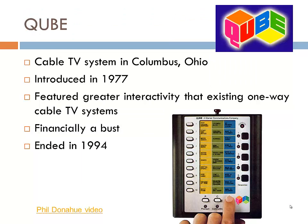One attempt to think about how technology might make democracy stronger was a cable TV system called Cube, introduced in 1977 in Columbus, Ohio. This system allowed for much greater interactivity between the viewer at home and the cable channel that offered the services. Unfortunately, the system was financially unsuccessful and the experiment ended in 1984.